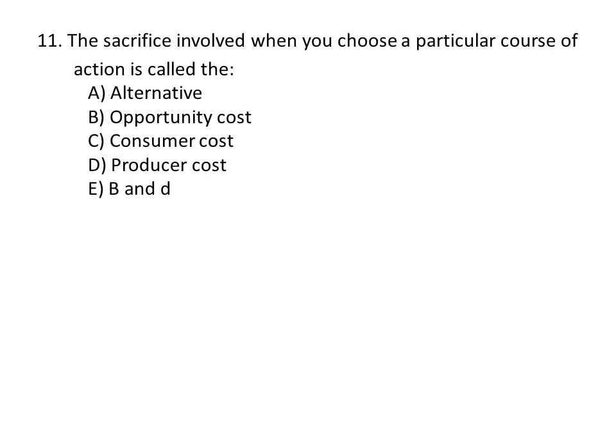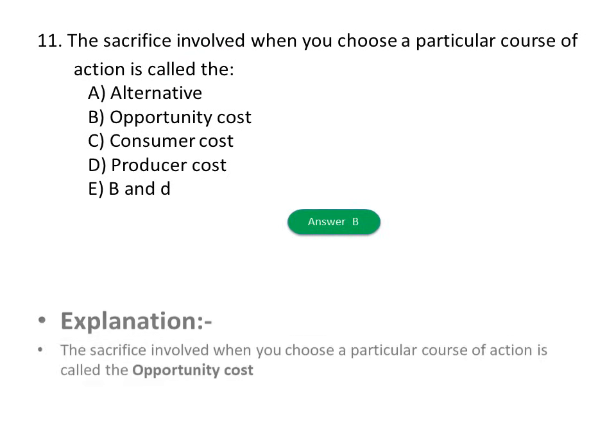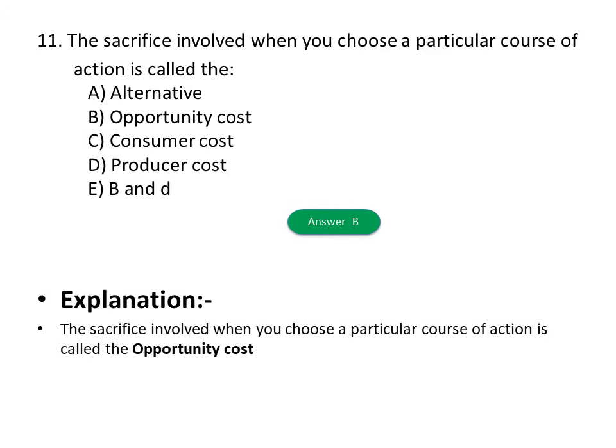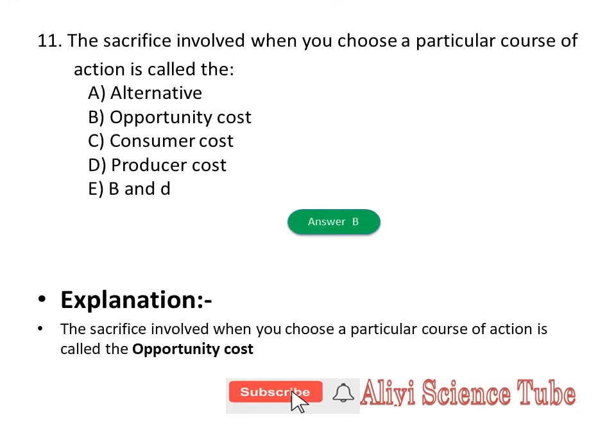Question eleven: The choice of proportions of labor, capital, and type of technology used to produce a commodity refers to which basic economics problem? A) What to produce, B) For whom to produce, C) How to produce, D) Where to produce, E) A, B, and D. The answer is C, how to produce.